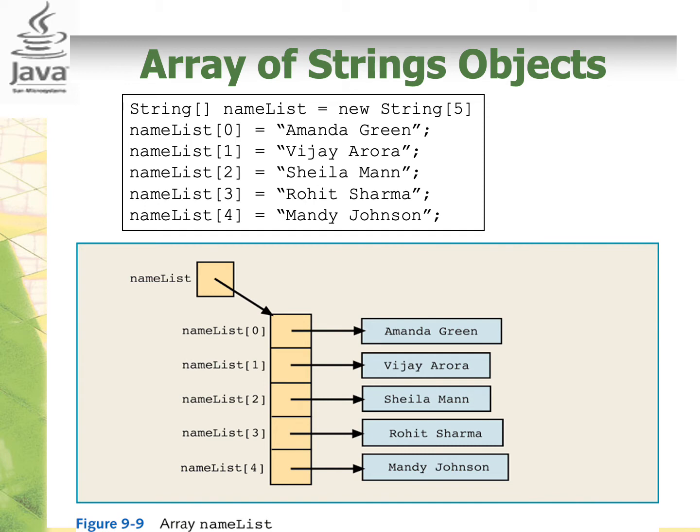So going back to this slide, when we have an array of string objects in memory, the address of the strings are kept where they then point to the real values. While in other primitive types, the values themselves are kept in the memory and can be accessed directly.